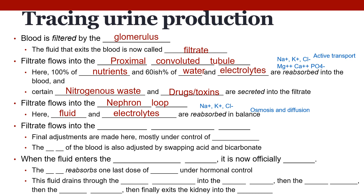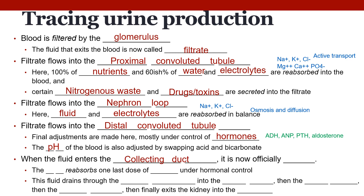In the nephron loop, fluid and electrolytes — sodium, potassium, and chloride — are reabsorbed through osmosis and diffusion, moving along their concentration gradient requiring no energy, and using membrane pores. Once leaving the nephron loop, filtrate flows into the distal convoluted tubule, where final adjustments are made mostly under hormonal control. The pH of the blood can also be adjusted here by swapping acid and bicarbonate. Finally, the fluid enters the collecting duct and is called urine; the collecting duct still reabsorbs a little water under the control of anti-diuretic hormone (ADH).